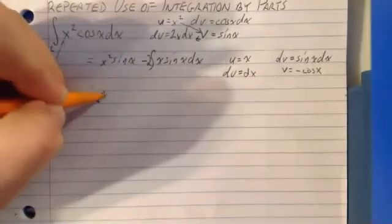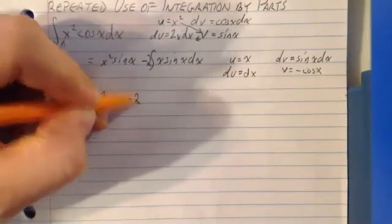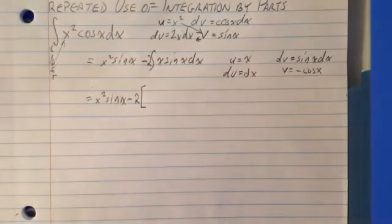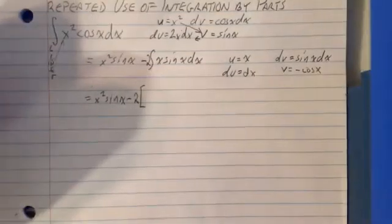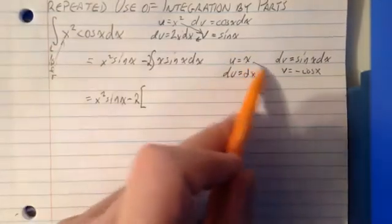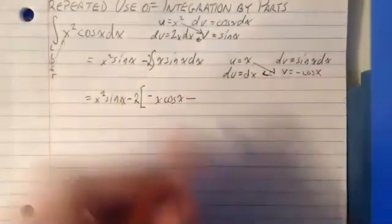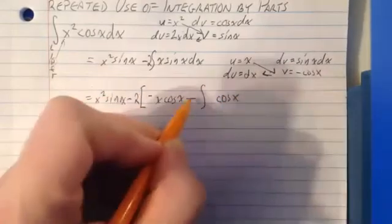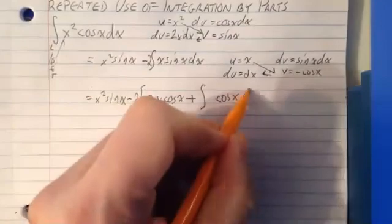So you have x squared sine x minus 2. Now I'm going to use integration by parts on that integral. So I'm going to do two times the answer to that. So I'm going to put a bracket there just so I keep track of what the two is multiplying. So again, uv, which is going to be negative x cosine x minus the integral of v du. So the integral of v, which is negative cosine x, but I'm going to factor the negative out and it's going to make that plus dx.